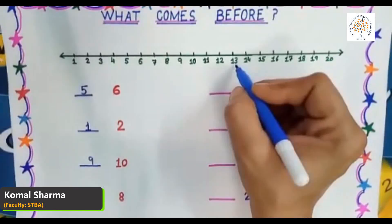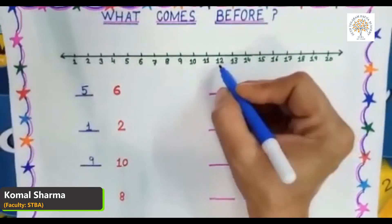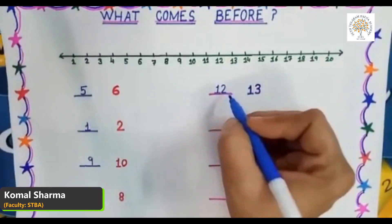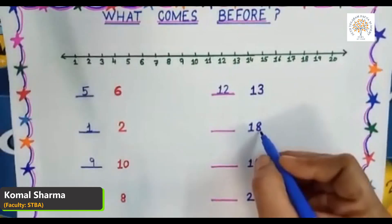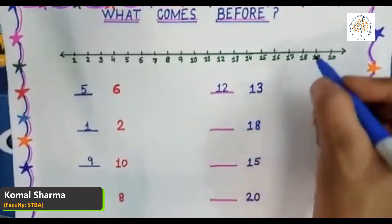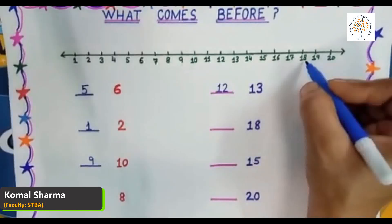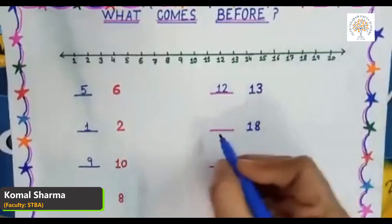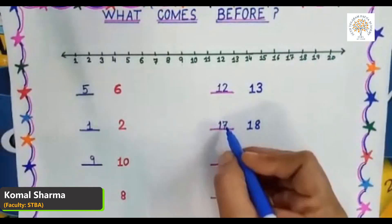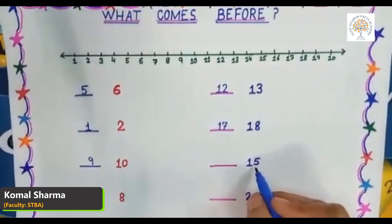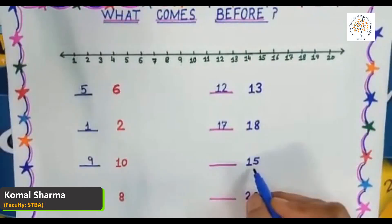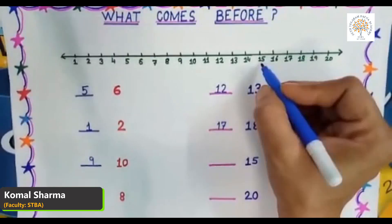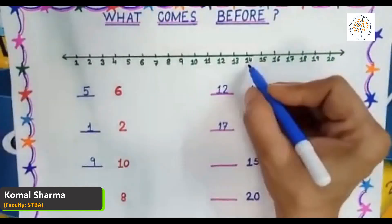Now tell me what comes before number thirteen. Look at the number line — here is number thirteen, and what comes before number thirteen? It is number twelve. And what comes before number eighteen? Here is number eighteen — yes, it is number seventeen. Now tell me what comes before number fifteen. Look at the number line — here is number fifteen, and what comes before it? Yes, it is number fourteen.